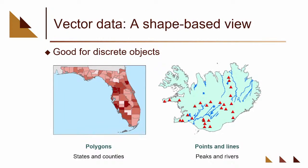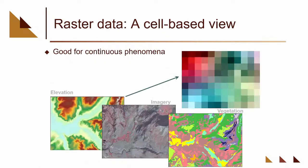Vector data is great for discrete objects — county boundaries, municipality boundaries, forest areas, lakes, rivers. Points, lines, and polygons — any discrete objects are great with vector data.